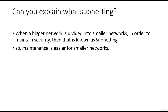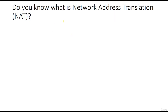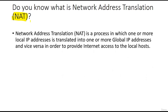What is Network Address Translation (NAT)? NAT is a process in which one or more local IP addresses are translated into one or more global IP addresses in order to access the internet. This is why you often see NATted IPs in organizations. The process can also work vice versa — from global IP addresses back to local IP addresses.